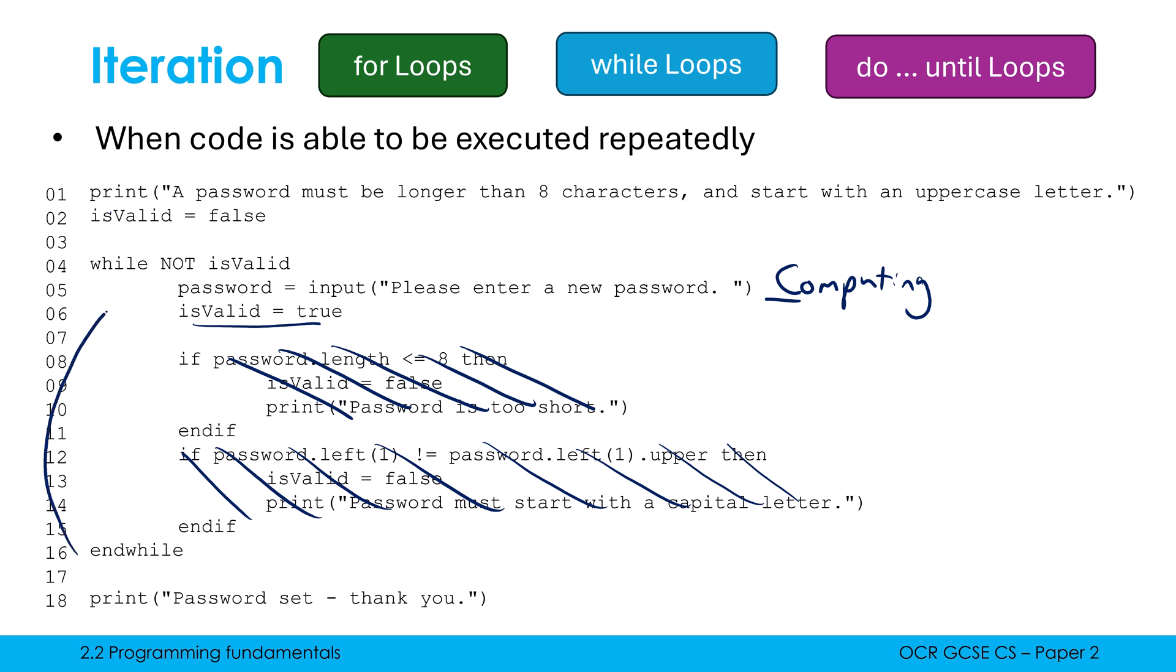When we go back around to look at our while loop, we go while not true, or while not true is while false. The while loop doesn't run if it is false. So we stop looping as soon as I type in a password longer than eight with a capital C.